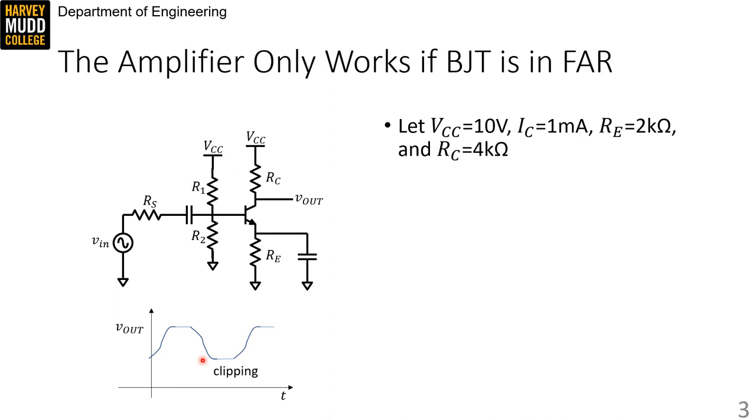We're going to make this circuit a little more concrete. Let's assume VCC is 10 volts, IC is 1 milliamp, RE is 2 kilo ohms, and RC is 4 kilo ohms.